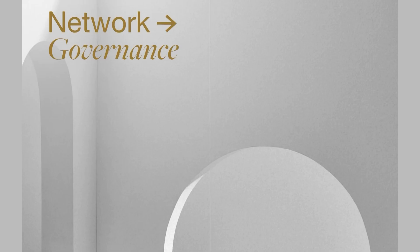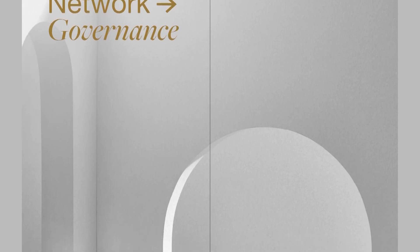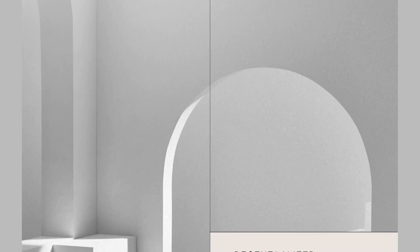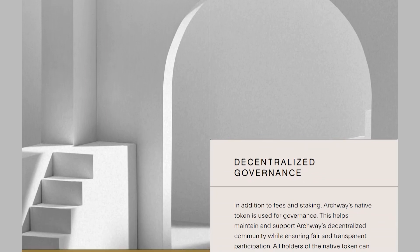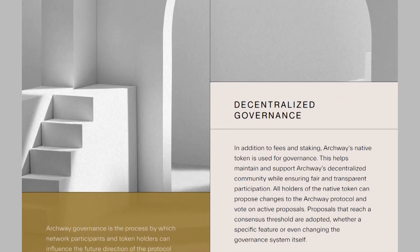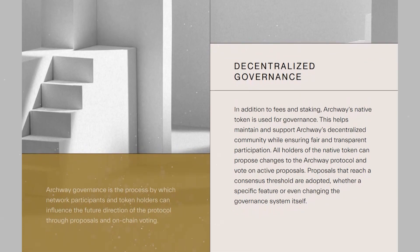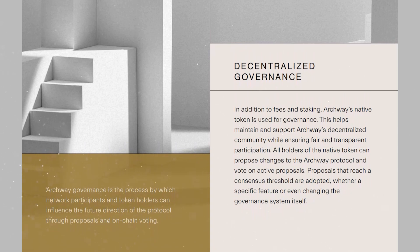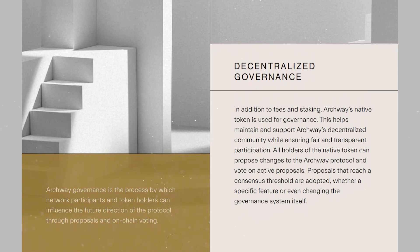Governance is another point worth mentioning. Governance is the process by which network users and token holders can influence the future of the project. Like many other projects, Archway's governance is conducted through the use of the native token. This governance model helps maintain and sustain Archway's decentralized community while ensuring fair and transparent participation. All token owners can propose changes to the protocol and vote on proposals. Proposals that reach a consensus threshold, whether it is a specific feature or a change to the control system itself, are accepted.